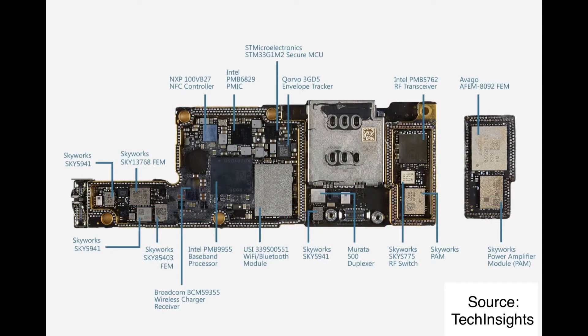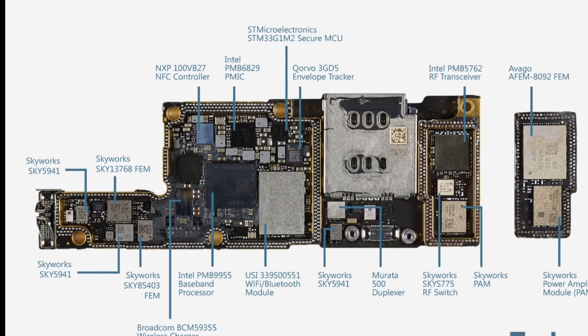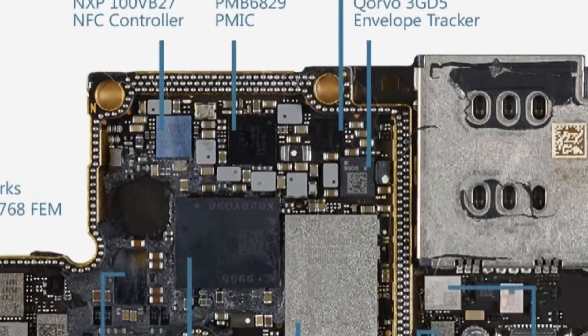The most important function of a smartphone is to make a call. So there are a lot of different semiconductor chips inside a smartphone to make that happen. Another very important chip is power management, which provides different power levels from the battery.